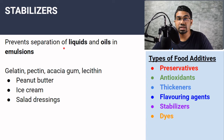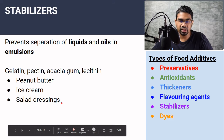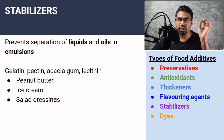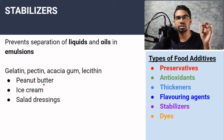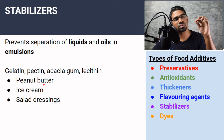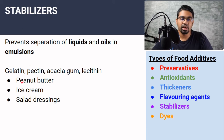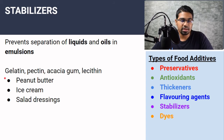Stabilizers are used to prevent separation of liquids and oils in emulsions. Foods like peanut butter, ice cream, and salad dressing are examples of emulsions — a mixture of oil and water forced to mix using certain processes. Without stabilizers, the emulsion will eventually break, causing the water and oil to separate into two layers. Stabilizers used include gelatin, pectin, acacia gum, and lecithin — some are the same substances as thickeners.